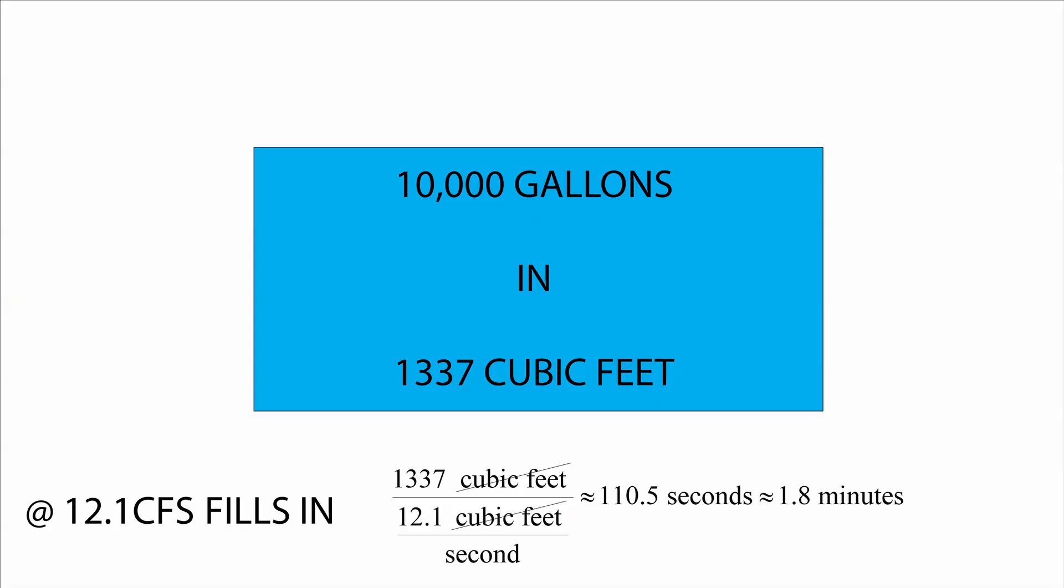Since 7.48 gallons is equal to 1 cubic foot, a flow of 12.1 cubic feet per second would fill this typical backyard swimming pool in less than two minutes.